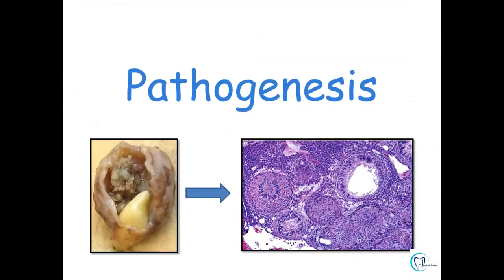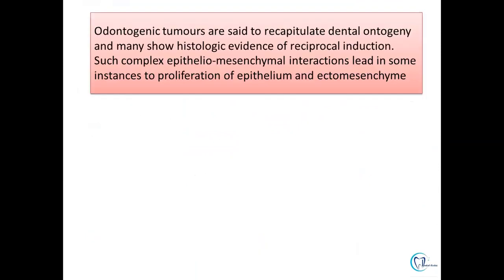Coming on to the pathogenesis, odontogenic tumours are said to recapitulate dental ontogeny — the complex epithelial-mesenchymal interactions during tooth development are found similarly in odontogenic tumours. However, there is failed induction or abortive enamel formation, meaning tooth development is not completed up to the stage of enamel formation.